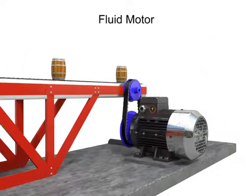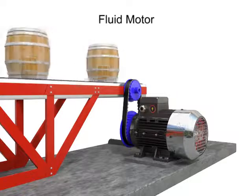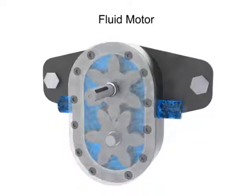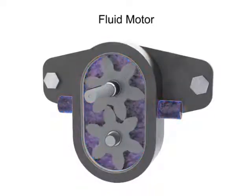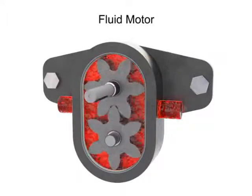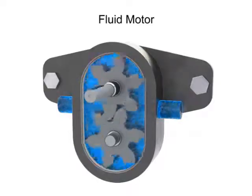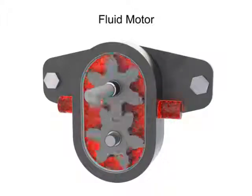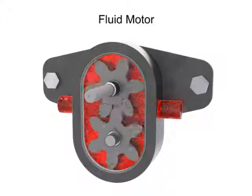Fluid motors have many advantages over typical electric motors. An electric motor can be prone to overheating, especially if it experiences higher than normal loads. Fluid motors, on the other hand, will simply stall and come to a stop if they are overloaded. Once the motor stops, the fluid begins to cool down. Additionally, unlike an electrical motor, fluid motor speed can be made responsive to its fluid temperature. If a sensor detects an increase in fluid temperature, the speed of the motor can be directed to reduce.